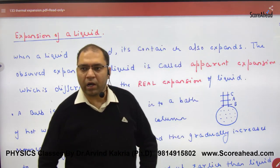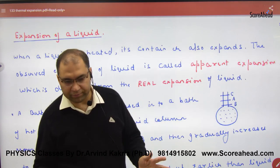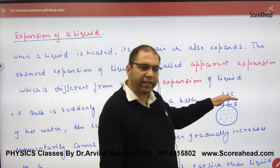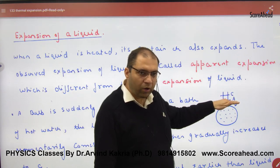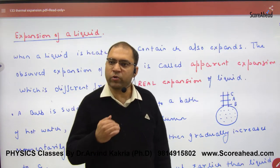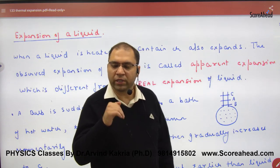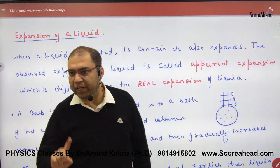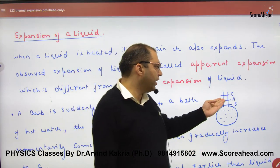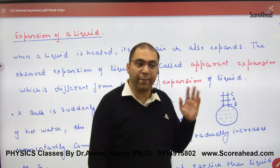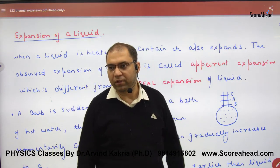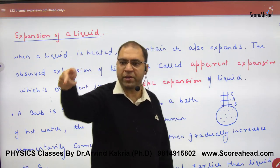Now, if someone only observes from above, they see the liquid was at level A and finally it is at level C. This expansion — from A to C — is apparent expansion. It is not real. What happened in reality is the expansion from B to C. So from B to C is real expansion.